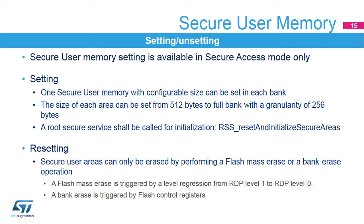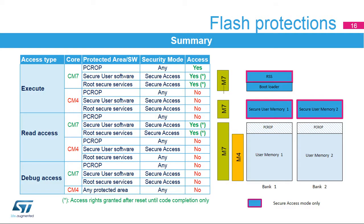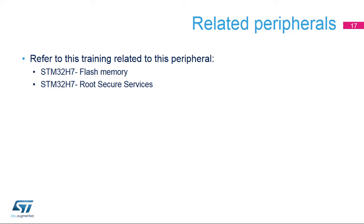A flash mass erase operation can be triggered by an RDP level regression from RDP1 to RDP0. This slide summarizes the different flash memory protections. Protected areas can only be accessed by the Cortex-M7 core according to their specific behavior. Root security services and secure user memories are accessible in secure access mode only. Access to any protected area is prohibited for the Cortex-M4 core and debug ports. Please refer to the flash memory training to learn more about the memory architecture, option bytes, and flash operations.